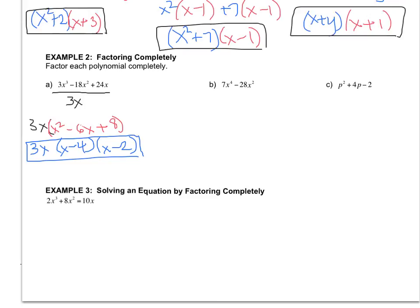All right, let's try example B. First thing I'm going to do is I'm going to look for a GCF, and it's 7x squared. Typically, if the directions say factor completely, they're giving you a hint that there's more than one technique to use. So I'll pull out 7x squared, and then I get x squared minus 4. Ooh, that's a binomial. So I'm going to check for dots, right? Difference of two squares.